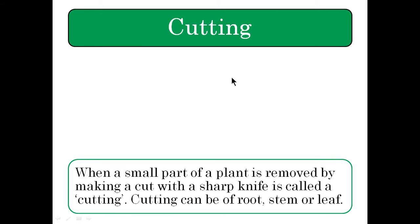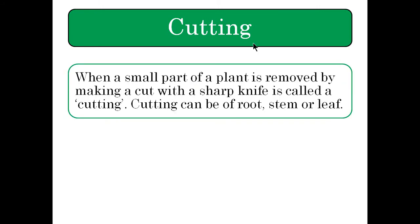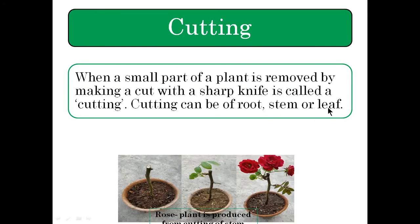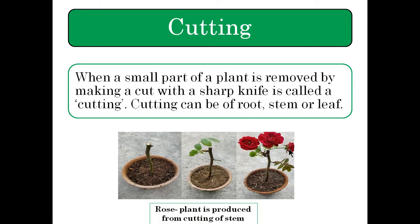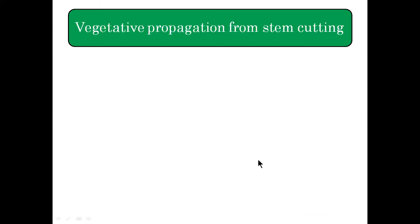First is cutting. Here, new plants are produced from cutting off parts of the plant — it can be a root, stem, or leaf. An example is the rose plant, where the stem is cut in such a way that it contains a few buds, and then this portion is buried in the soil. After few days, roots and shoots start developing and it grows into a new rose plant.